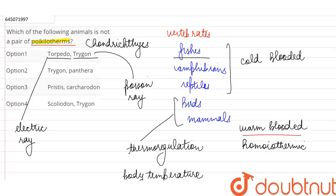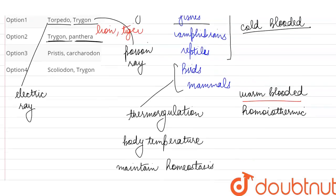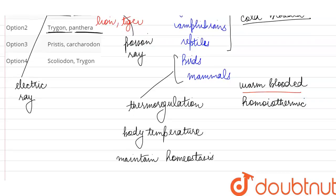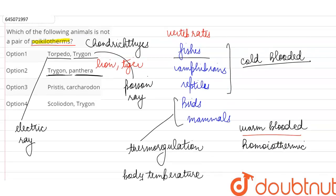So since both of these are fishes, they are both cold-blooded. Next, they are saying Trygon again, but then they have given Panthera. So Panthera is the genus in which we are going to place the animals like lion and tiger. So this will be a mammal and it will be warm-blooded. B will be our correct answer.